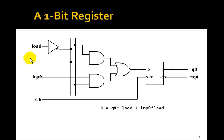Then when load goes back low, then whatever's in Q0 just stays there, as it just keeps wrapping around. So this is a little circuit that would make a 1-bit register. We can write the logic equation for D. D is just going to be Q0 ANDed with NOT load or input 0 ANDed with load. So here's the logic equation for D.